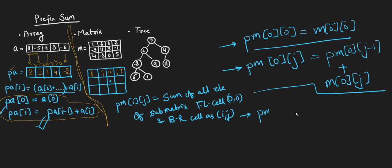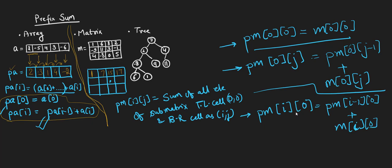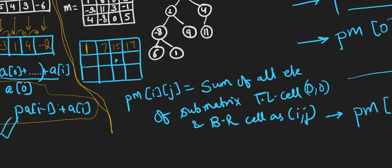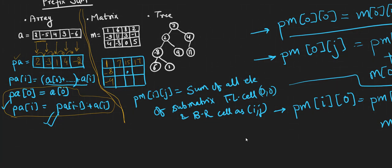Similarly, to fill the first column with any row i and column 0, the formula is PM[i][0] = PM[i-1][0] + M[i][0]. So the first column is also filled like a 1D array: 1, then 1 + (-9) = -8, then -8 + 4 = -4. So the first row and first column are done.